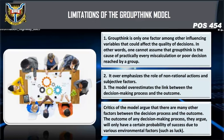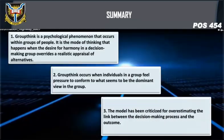Regarding the limitations of the groupthink model: groupthink is only one factor among other influencing variables that could affect the quality of decisions. One cannot assume that groupthink is the cause of practically every miscalculation or poor decision reached by a group. The model over-emphasizes the role of non-rational actions and subjective factors, and overestimates the link between the decision-making process and the outcome. Critics argue that many other factors intervene, and that outcomes only have a certain probability of success due to various environmental factors.